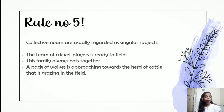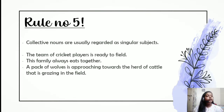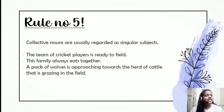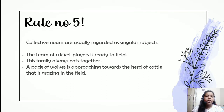Rule five: collective nouns. These are words used to refer to a group of something, like 'team,' 'family,' 'herd.' These are considered singular subjects and must take a singular verb. For example, 'the team of cricket players is ready to field' — 'team' is a collective noun so we use the singular verb 'is.' Similarly, 'this family always eats together,' and 'a pack of wolves is approaching towards the herd of cattle that is grazing in the field.'